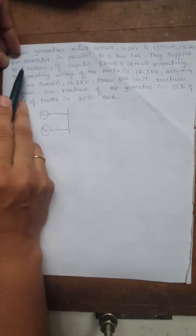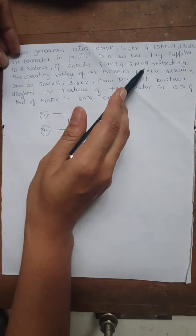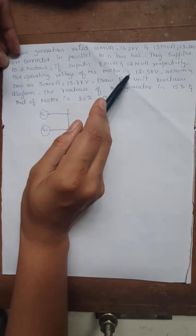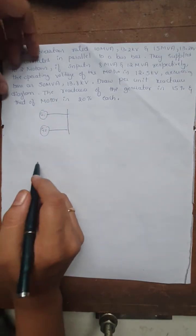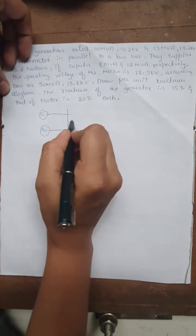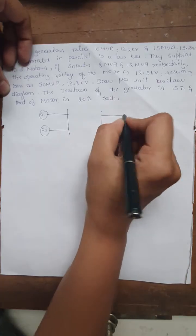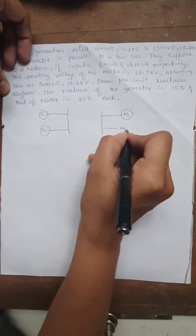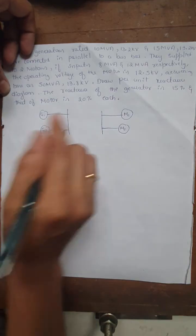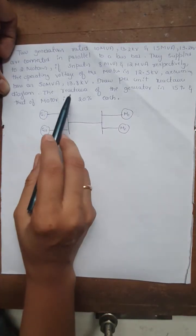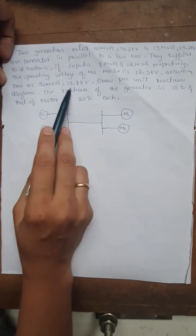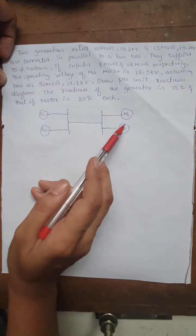The generators supply two motors with inputs of 8 MVA and 12 MVA respectively. The base power is 50 MVA and base voltage is 13.8 kV. Motor 1 and motor 2 are connected in parallel. There is no transformer or transmission line mentioned, so the two bus bars are simply connected. Both generator pairs and motor pairs are connected in parallel to a common bus bar.